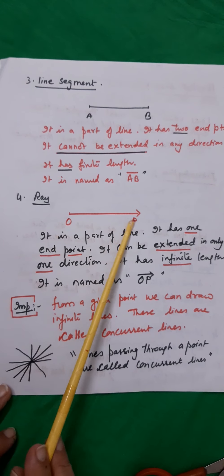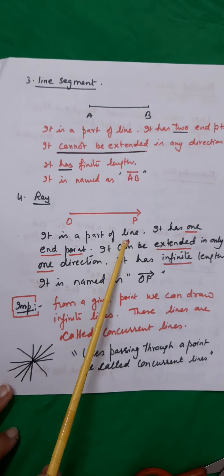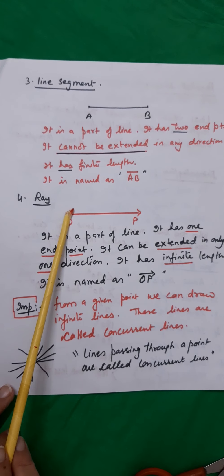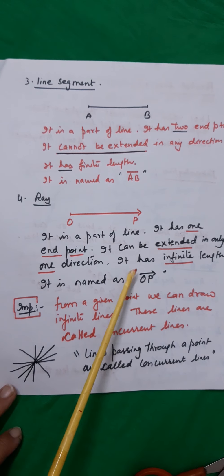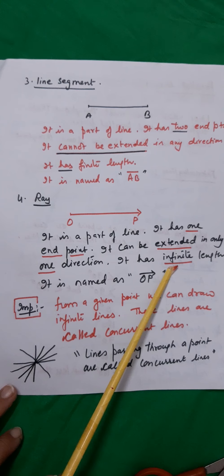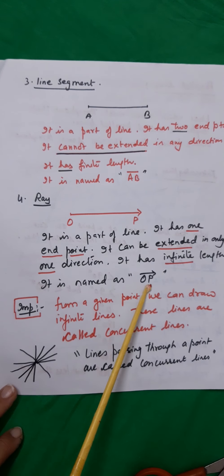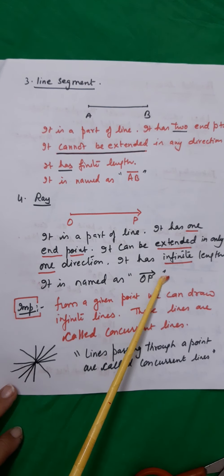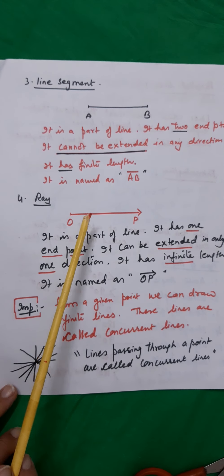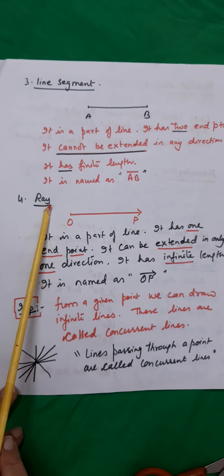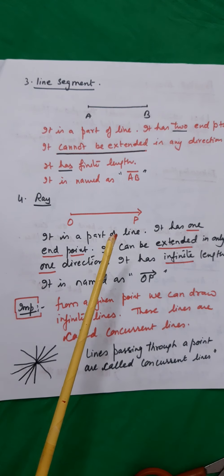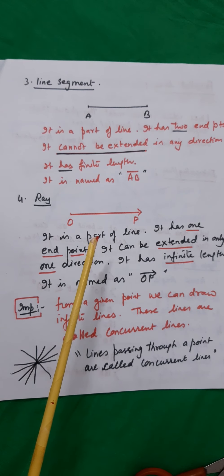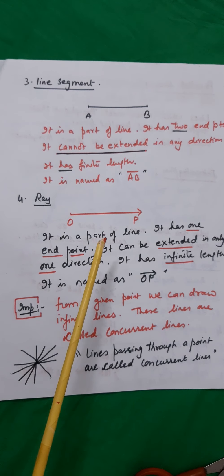Ray — it is a part of a line again, but it has only one end point and it can be extended in the other direction. It has infinite length. It is named as OP with an arrow over it. A very good example of a ray is torchlight — you have a torch, and as you switch on the button and the bulb glows, the rays of light travel to infinity. That is a very good example of a ray.